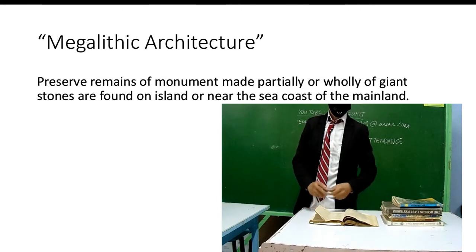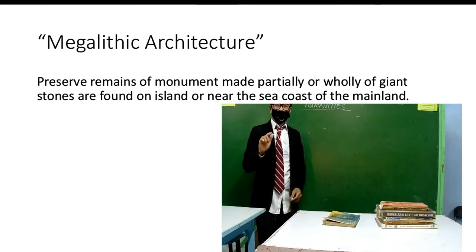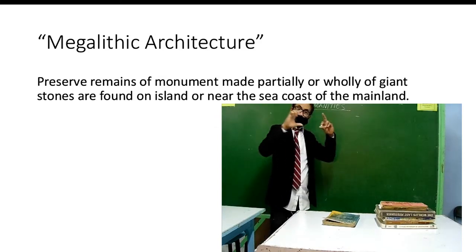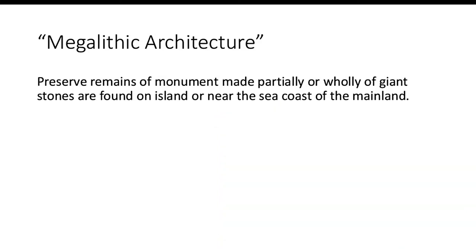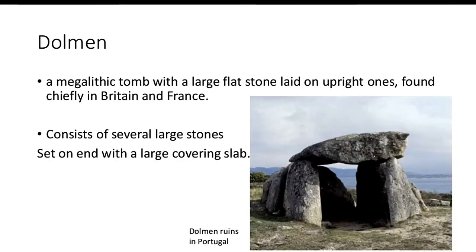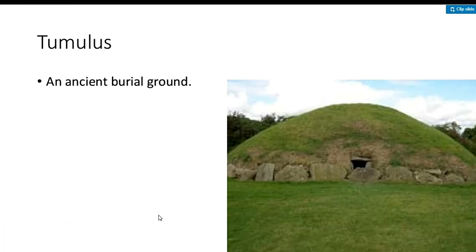What is megalithic architecture? These are large stones made into monuments and preserved. Examples include those on Easter Island and Stonehenge. The dolmen is a structure with two upright posts and a large flat stone laid on top — a megalithic tomb with a large flat stone laid on upright ones, found chiefly in Britain and France.